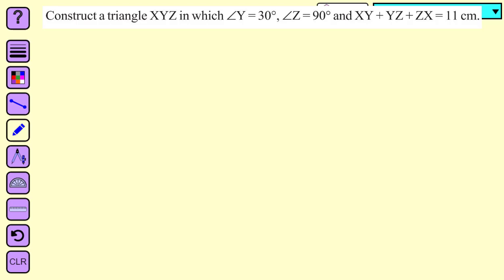Hello students. In this lecture, we will construct a triangle XYZ in which the measure of angle Y is equal to 30 degrees, the measure of angle Z is equal to 90 degrees, and XY + YZ + ZX = 11 centimeters.